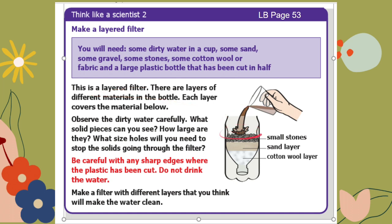This is a layered filter. There are layers of different materials in the bottle. Each layer covers the material below. Observe the dirty water carefully — what solid pieces can you see? How large are they? What size holes do you need to stop the solids going through the filter? Be careful with any sharp edges where the plastic has been cut, and do not drink the water.